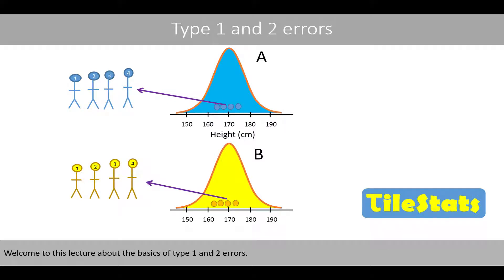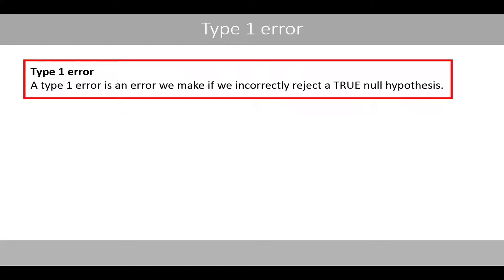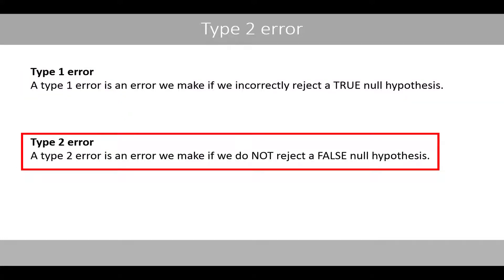Welcome to this lecture about the basics of type 1 and 2 errors. A type 1 error is an error we make if we incorrectly reject a true null hypothesis, whereas a type 2 error is an error we make if we do not reject a false null hypothesis.